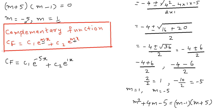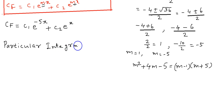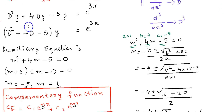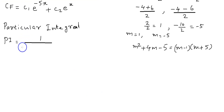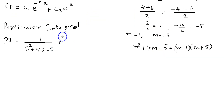Now we have finished the first part of the question. Now we need to find the particular integral. The particular integral is equal to 1 by D squared plus 4D minus 5, into e raised to 3x.